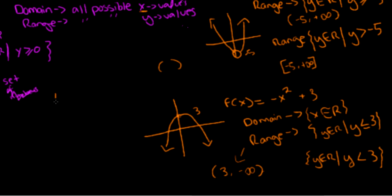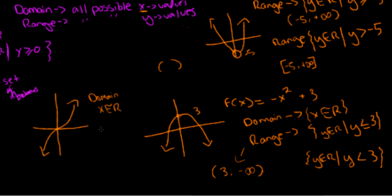For a cubic function — y equals x cubed — the range and domain are always all real numbers: x is all real numbers and y is all real numbers, because there are no restrictions. This includes any other odd-degree functions such as x to the 5th, x to the 7th, x to the 9th. For even-degree functions like x squared, x to the 4th, x to the 6th, the domain is always x is all real numbers, but the range always starts from the minimum point and continues to either positive infinity (positive leading coefficient) or negative infinity (negative leading coefficient).